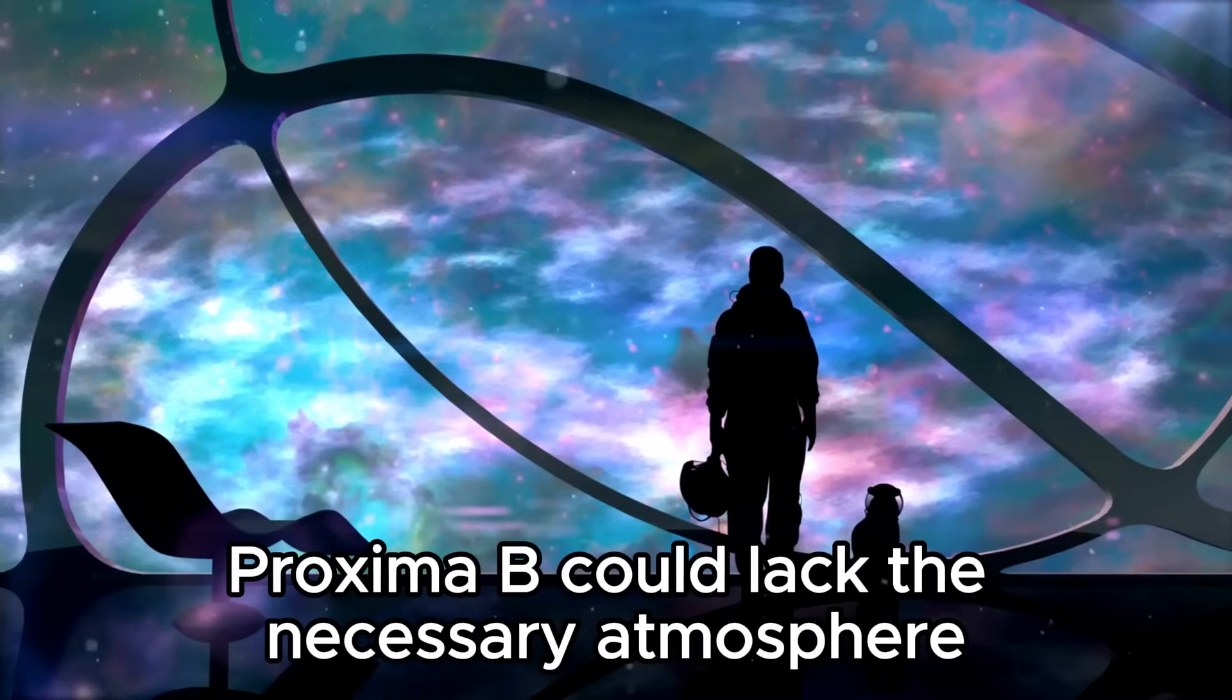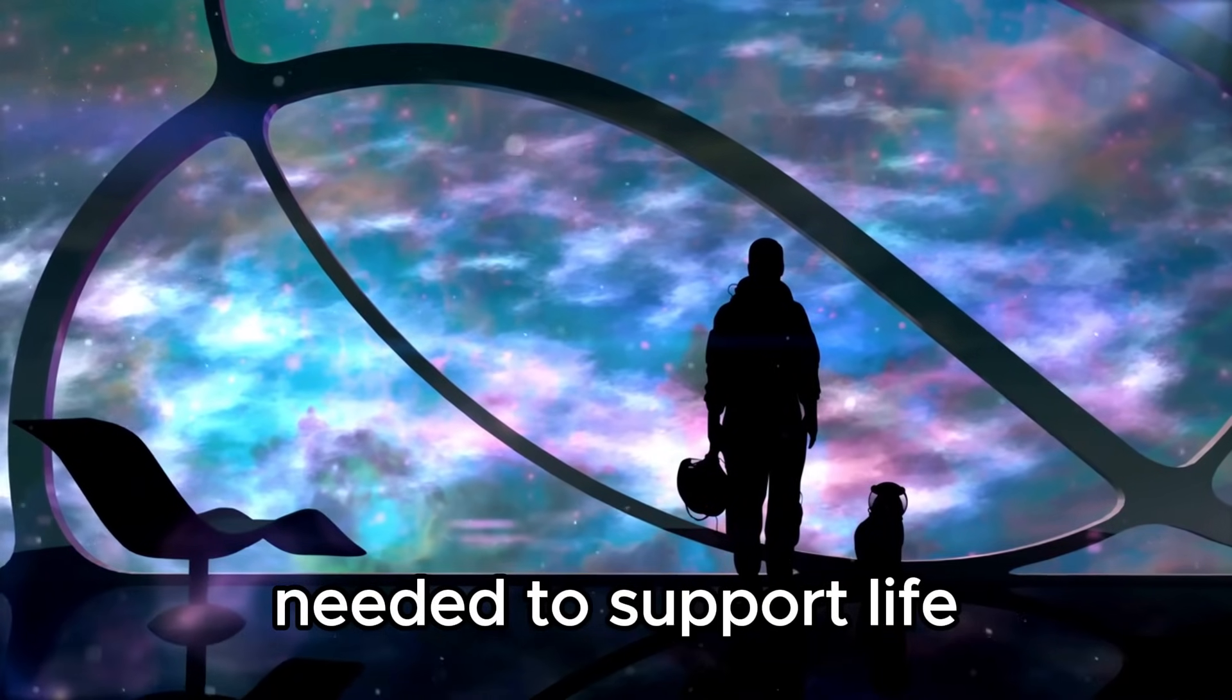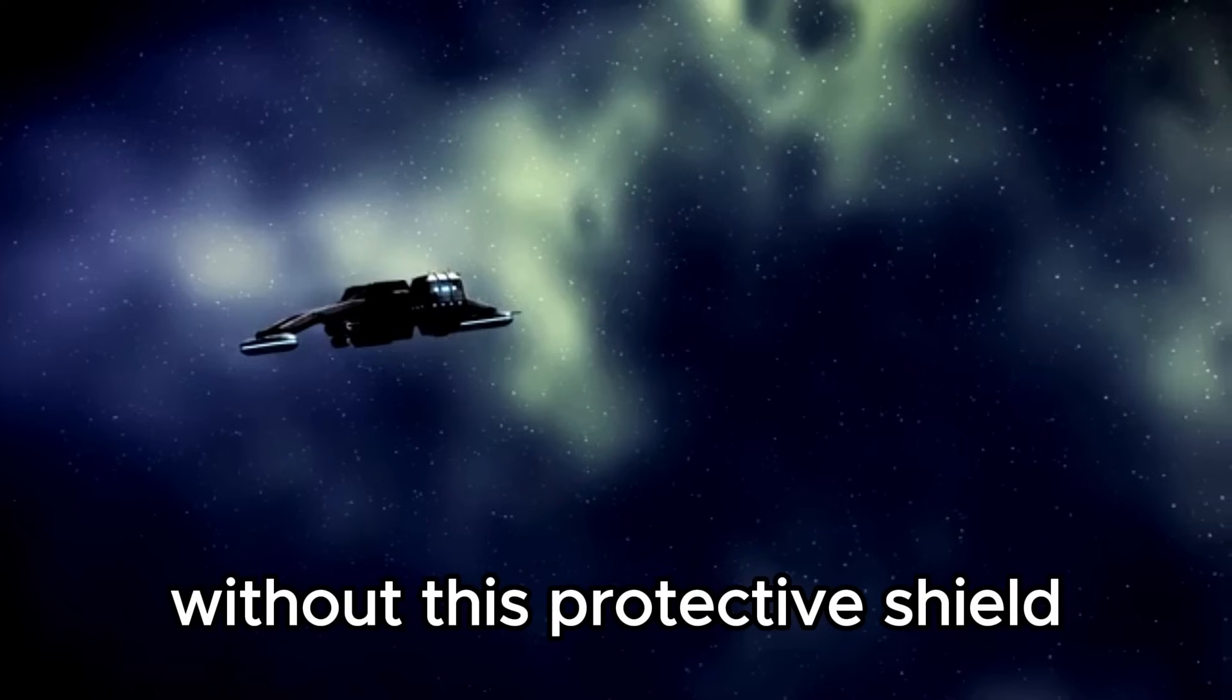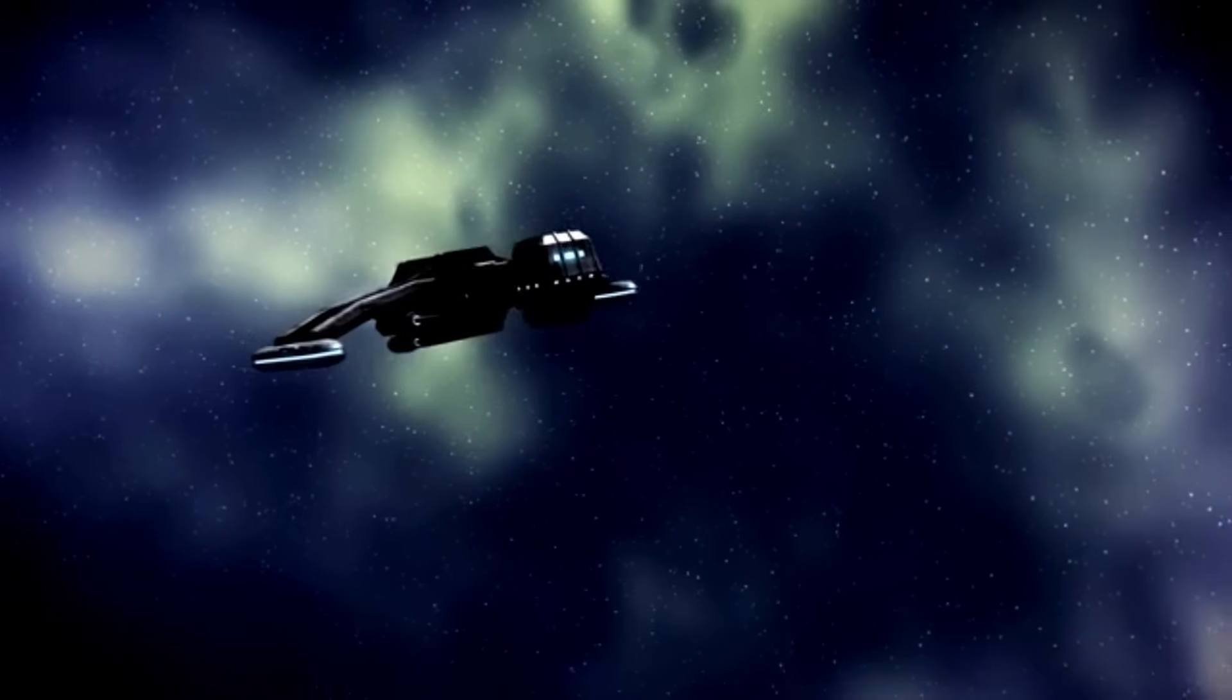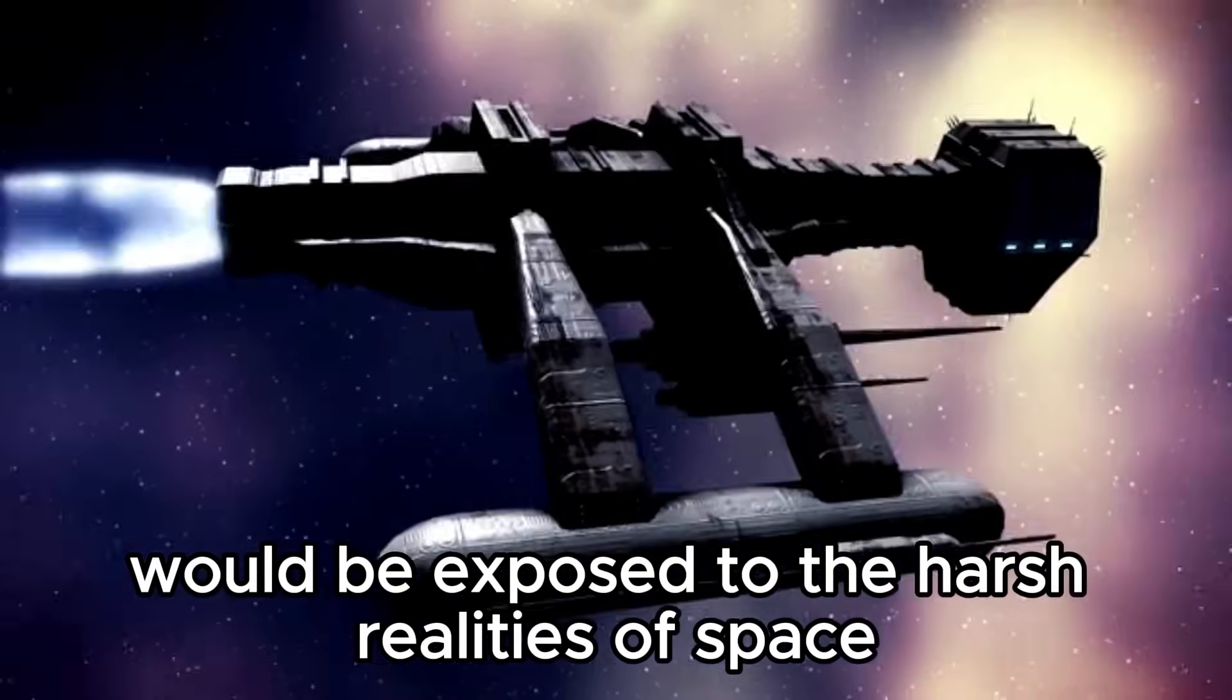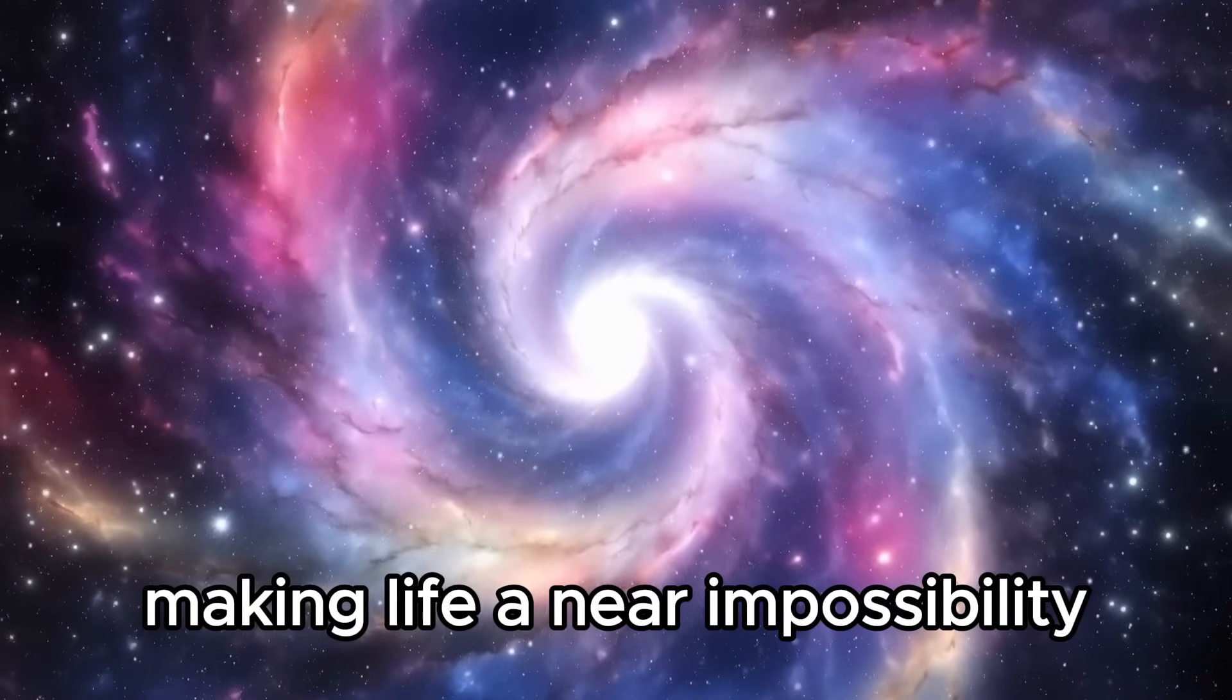Proxima b could lack the necessary atmosphere needed to support life, control climate, and maintain a water-friendly surface. Without this protective shield, any potential life forms would be exposed to the harsh realities of space, making life a near impossibility.